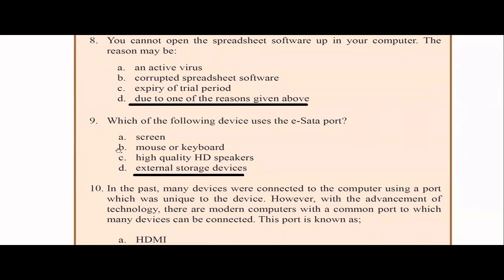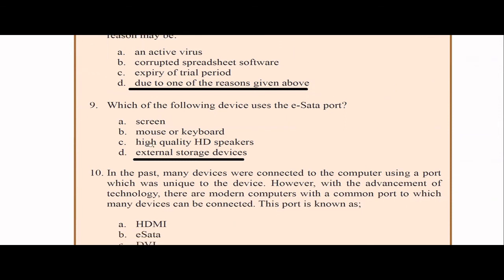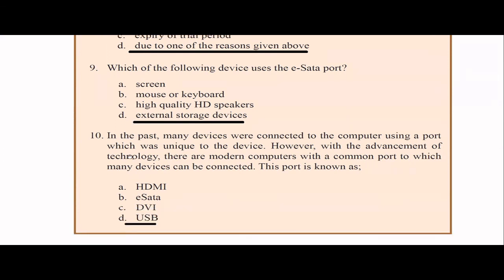Which of the following device uses the eSATA port? This is in textbook also we have this very clearly mentioned. eSATA port is basically used for the external storage devices. In the past, many devices were connected to the computer using a port which was unique to the device. However, with the advancement of the technology, there are modern computers with a common port to which many devices can be connected. And this port is the most popular, that is the USB port. Because with USB port, you can connect a lot of devices, maybe your headsets, keyboards, mouse, wireless things. There's a small gadget to connect that is also using the USB: printers, sensors, scanners, portable hard disks, even you can connect all these devices into USB port, because that is what modern computer will have as a common port, rather than having separate kind of ports.